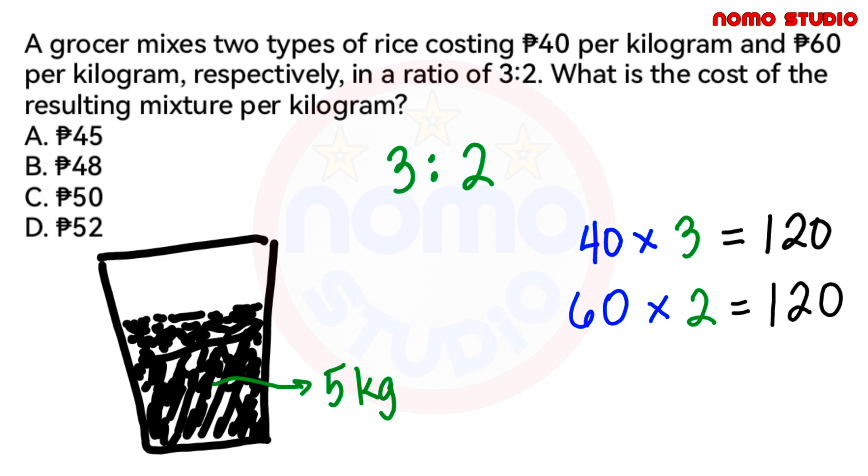Now, ang gagawin naman natin is to get the sum of these two prices. So 120 plus 120 and it gives us 240 pesos. Ibig sabihin lang nito that the total cost of the mixture is simply 240 pesos.